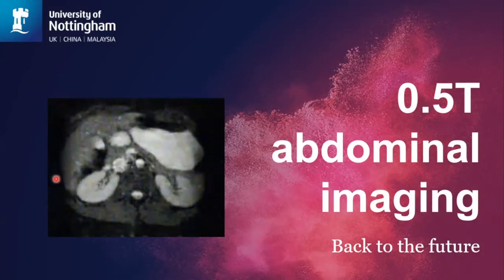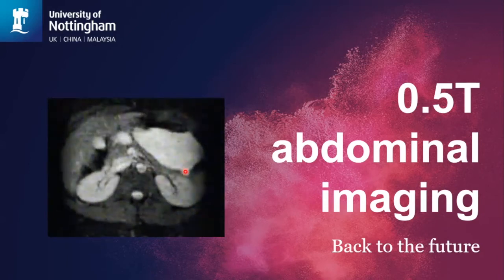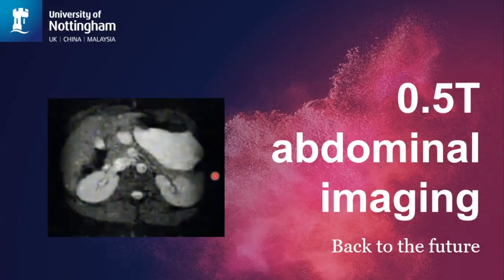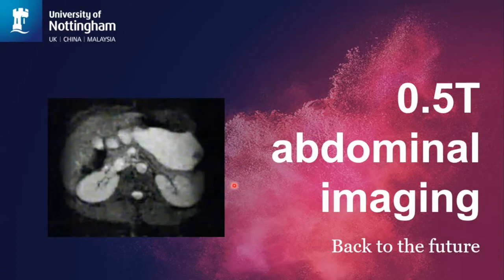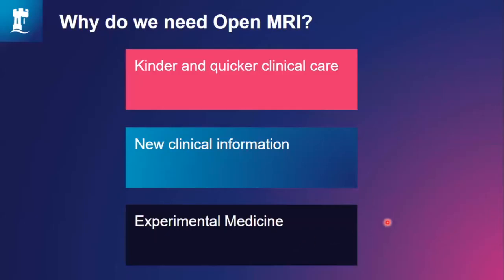This image is a half Tesla EPI scan of the stomach from around 1990. What this shows is that EPI works in the body, and that half Tesla can give you extremely important information. For me, this is back to the future. We're doing 0.5T not arbitrarily — we're doing it because it gives us an open MRI architecture. It's an open scanner from ASG Paramed.